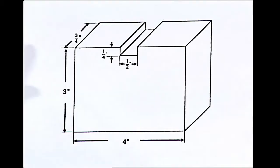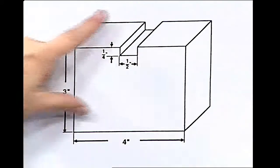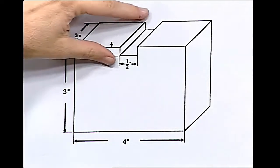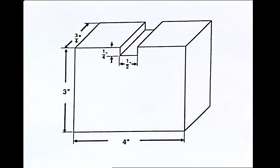For example, we have a shape here that requires the use of several steps to solve. We have a large rectangular prism that has a notch cut out of the top. You'll notice that the top is also a rectangular prism, it's just much smaller.